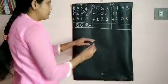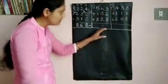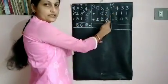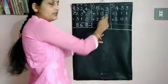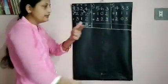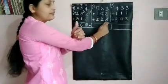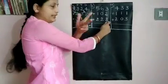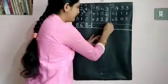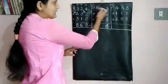So follow this method. Let us go to the second one. So add the ones first. 3 plus 2 plus 3. So 3 plus 2, 5. 5 plus 3, 8. So 8. Next, add the tenths.